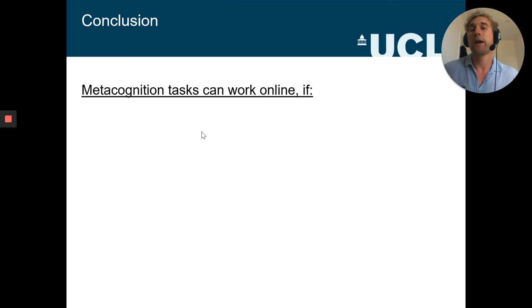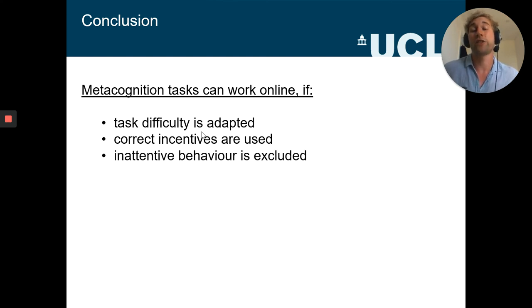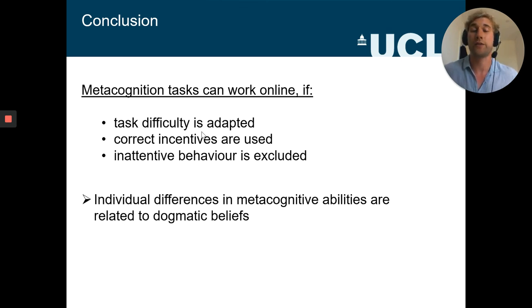So these were just like two example studies using our metacognition tasks online. To sum up, I hope I have convinced you that you can use metacognition tasks online. And it's important that you staircase the task difficulty, that you incentivize participants for good task performance, and that you just exclude dodgy behavior. But if you do all of that, I think online tasks to measure metacognition can be very powerful tool to look at individual differences, for instance in our case related to dogmatic political beliefs.